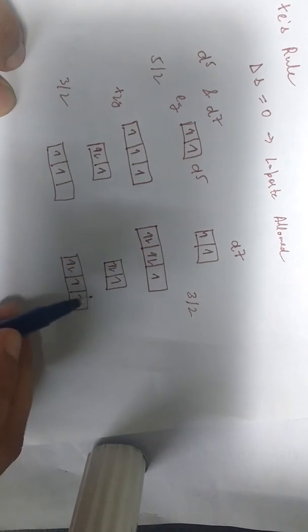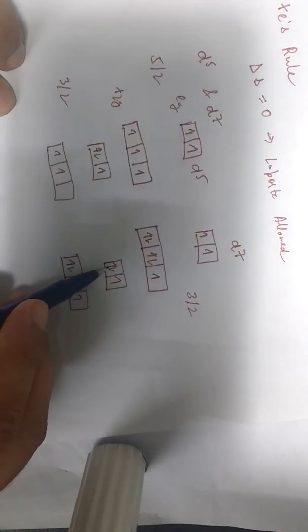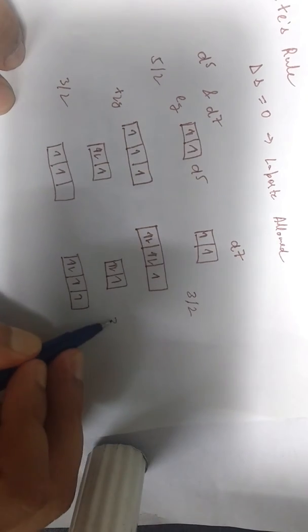So this will be 3 by 2, right, the total spin. If we calculate the total spin over here, again, half plus half, 1 plus half, 3 by 2, 2, 5 by 2, 5 by 2 minus 1, so here also 3 by 2.